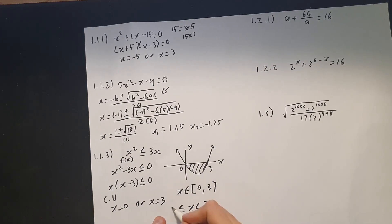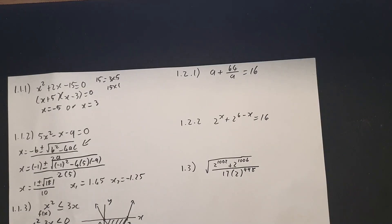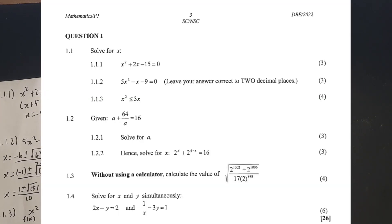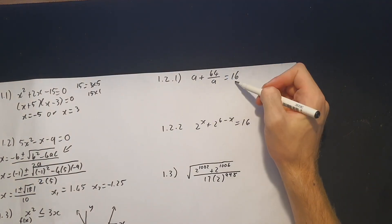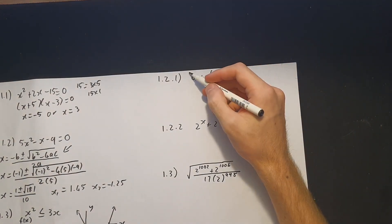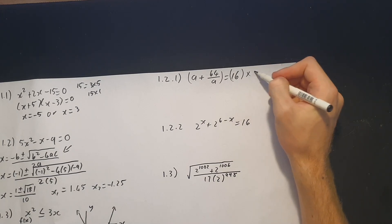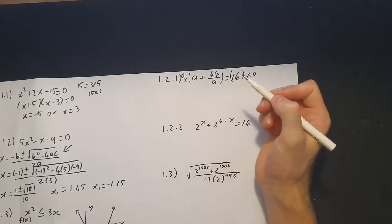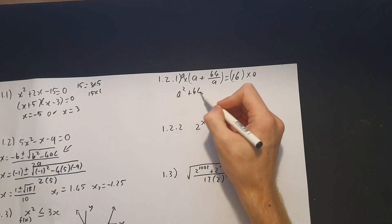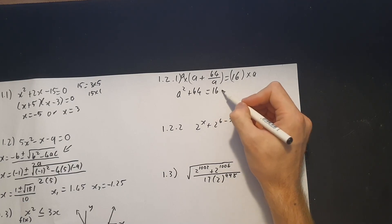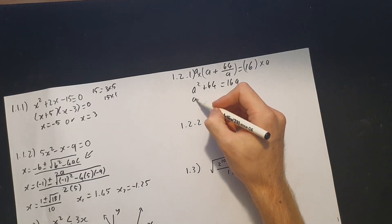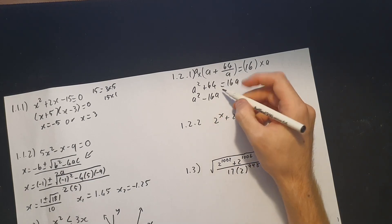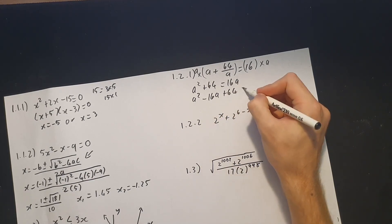Moving on to 1.2: given a + 64/a = 16. For 1.2.1, solve for a. To get rid of the fraction, multiply both sides by a, giving a² + 64 = 16a. Taking everything over: a² − 16a + 64 = 0.